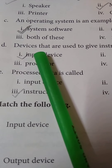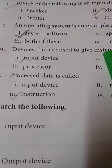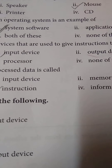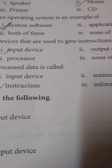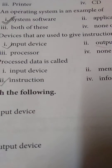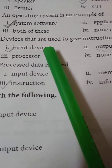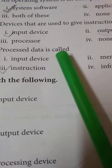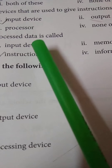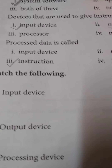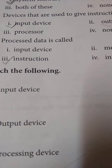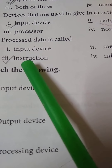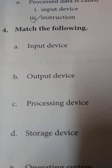D: Devices that are used to give instructions to the computer are called input device, output device, processor, or none of these? The answer is input device. E: Processed data is called input device, memory, instruction, or information? The correct answer is instruction.